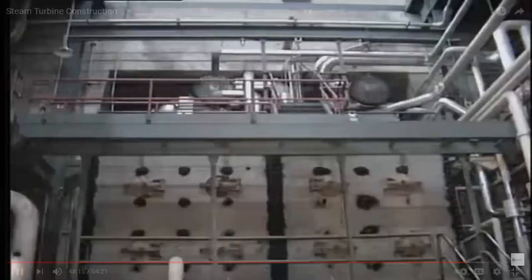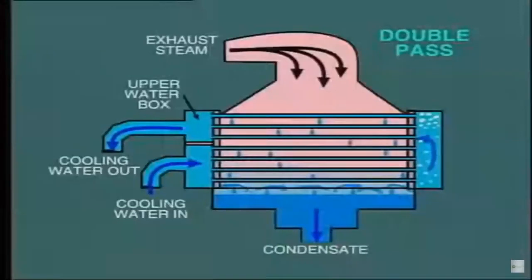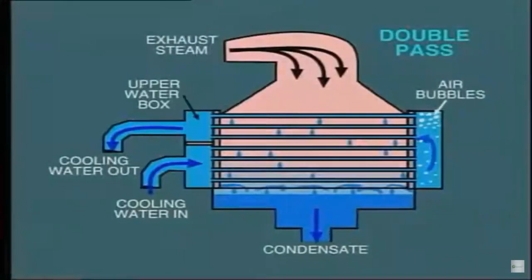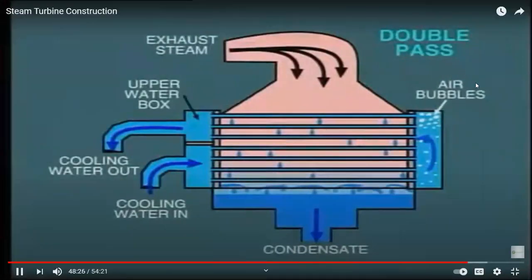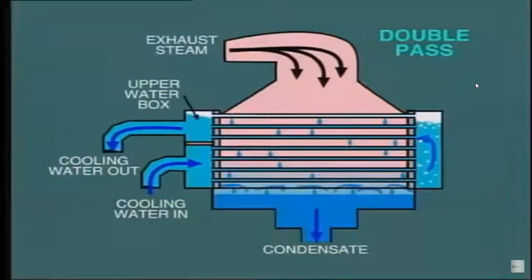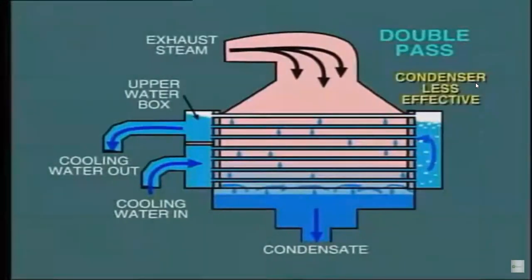But how could it be otherwise? The circulating water will likely contain air bubbles, which may be released at the top of the water box, forming a large air pocket. In time, as the air pocket increases, the level of the water at the top of the water box falls, and consequently, there will be no water flow through some of the tubes. The result of this reduction in heat exchange will be that the condenser is less effective and the turbine back pressure increases.